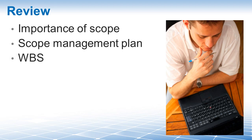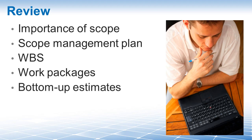Then we have the work breakdown structure, the WBS — one of the most important documents on your project. This is a deliverables-oriented, hierarchically organized list of your project deliverables. It contains things, items, deliverables, results, or products — so it talks about what we deliver, not how we deliver it. And of course it contains 100% of the project's scope. Items at the lowest level of the WBS are called work packages. We will encounter these work packages again in project time management — that is where we will figure out how we will produce them. The WBS is also the basis for making a bottom-up estimate. Later on in the time and cost management chapters, you will learn how the WBS is used to estimate how long each work package will take to complete and how much it will cost.